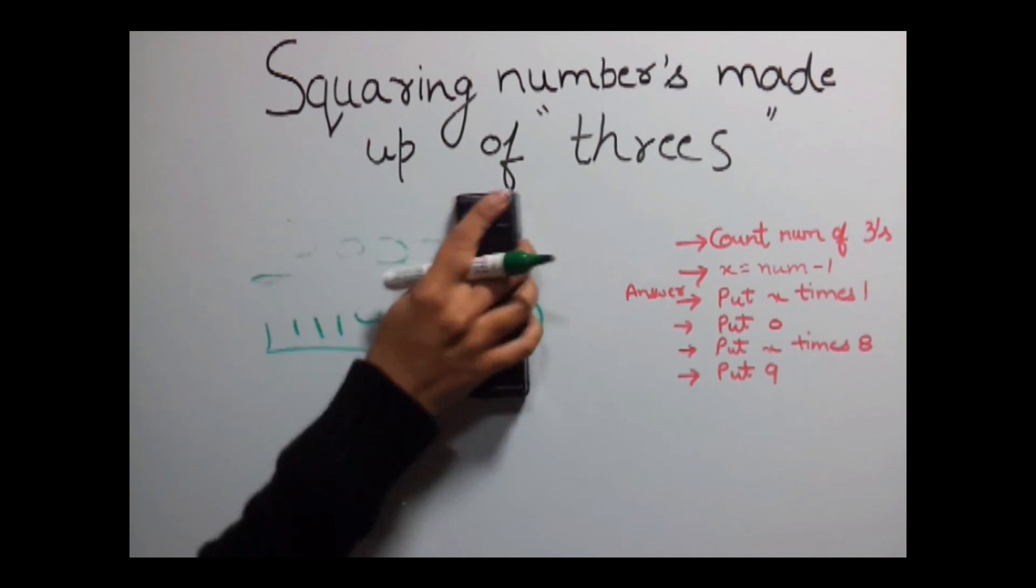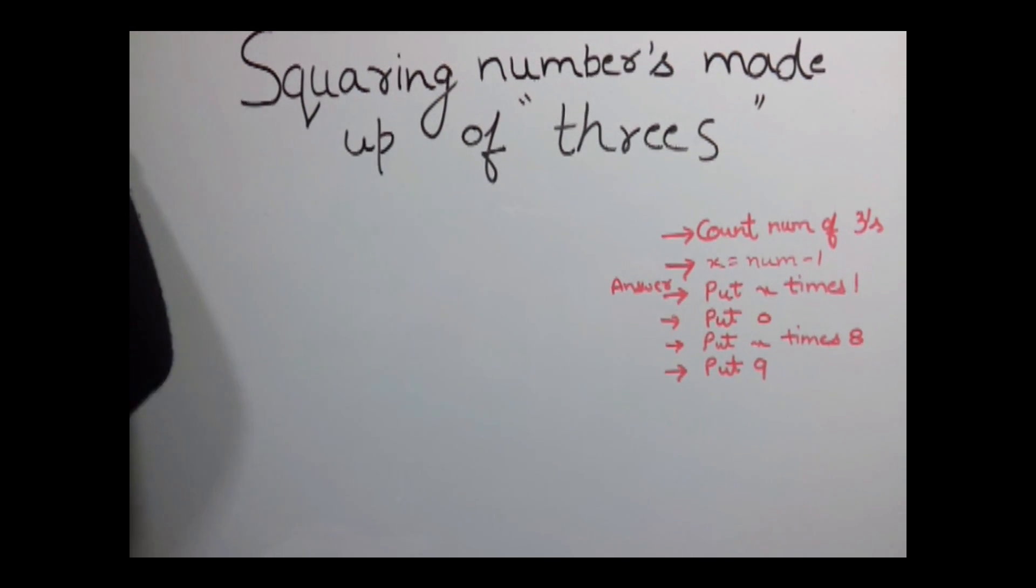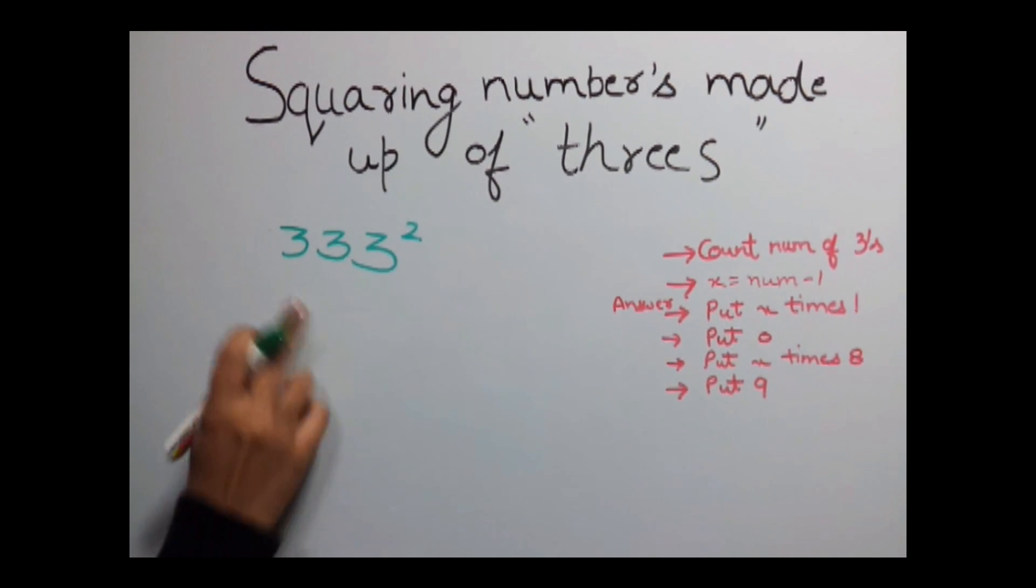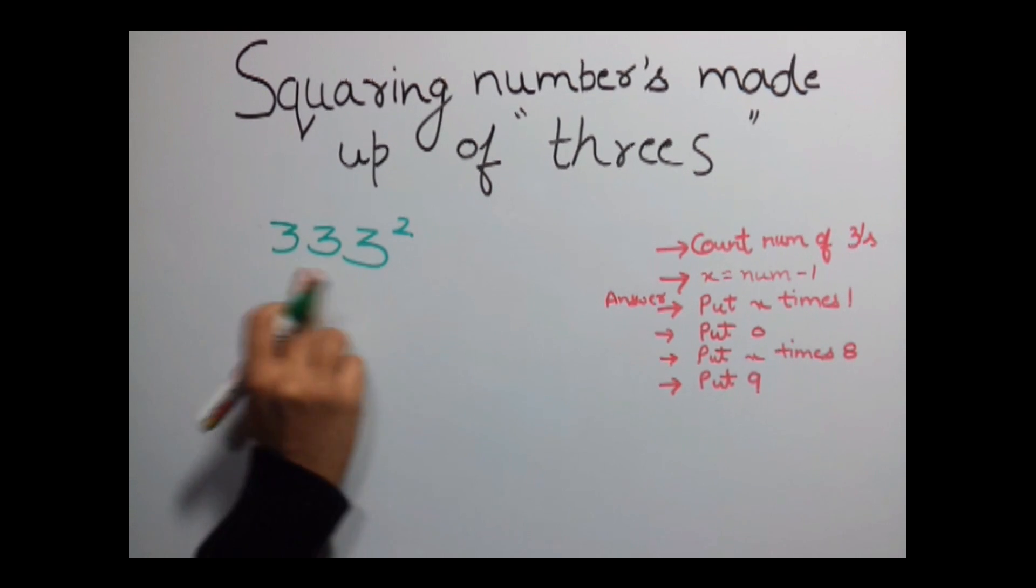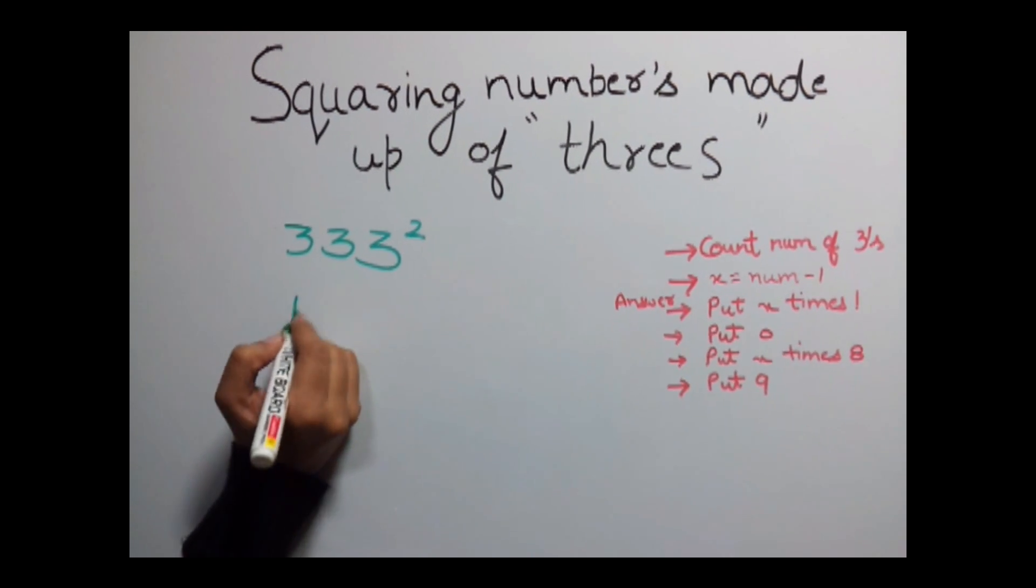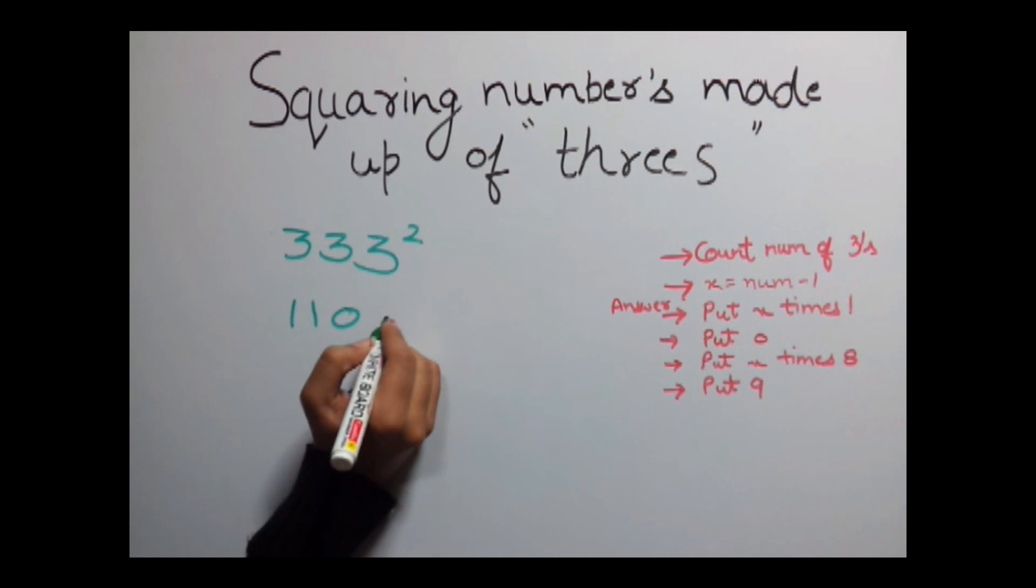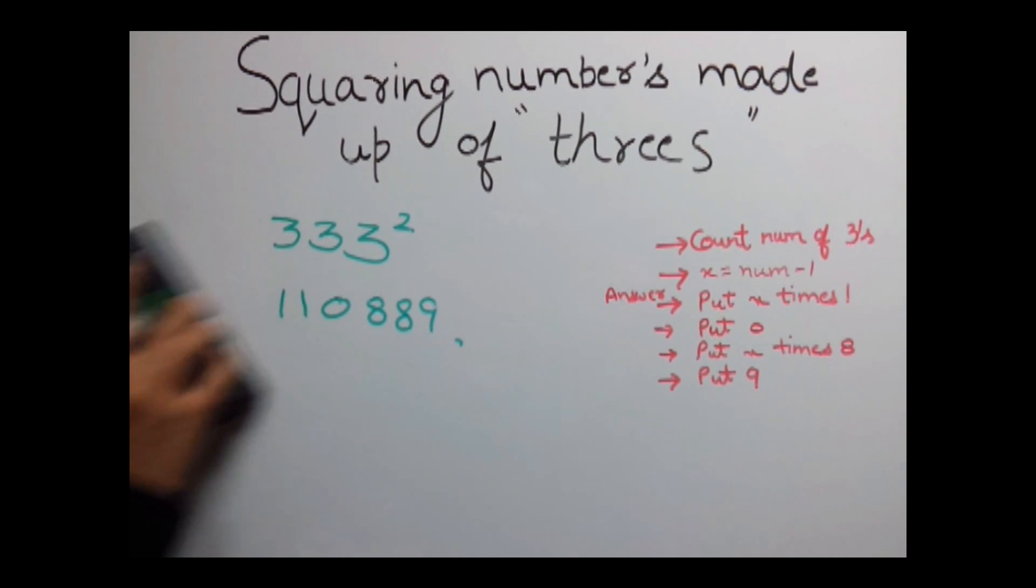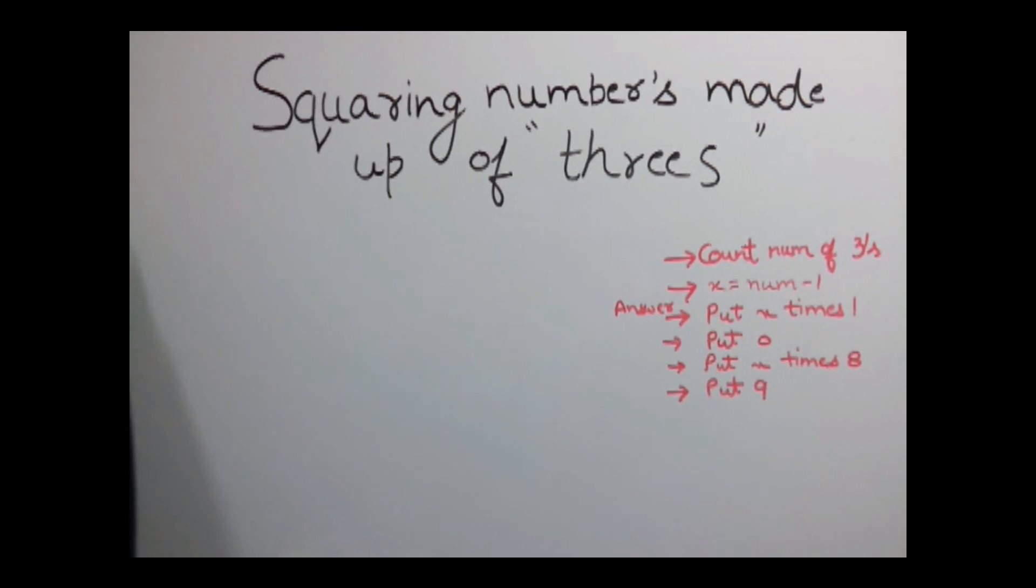Easy. Let's have another example. Let's find out the square of 333. So here number of 3's are 3. So value of x would be 2. Put 2 times 1. Put a 0. Put 2 times 8 and then put a 9. You can directly have the answer without calculating it.